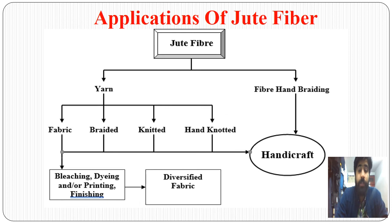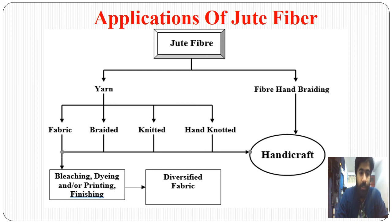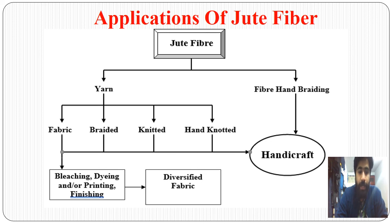The topic I will discuss is applications of jute fiber. Jute is mainly used in two forms: yarn and fiber hand braiding. Fiber hand braiding is further used in handicrafts, and yarn is used to make fabric which can be nonwoven or woven according to the required end application.